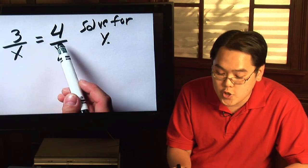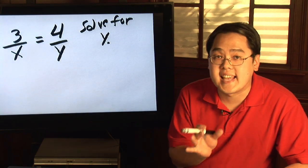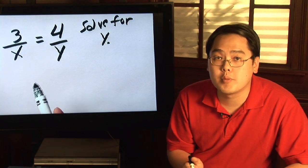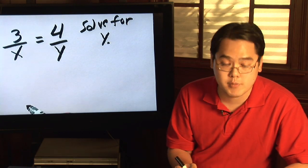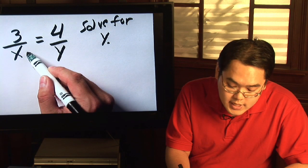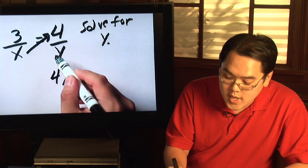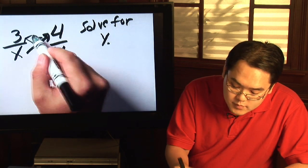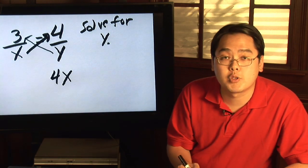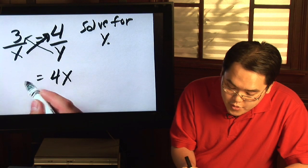But the thing is, because you have two proportions, you still solve it the exact same way like you would normal proportion problems, and that is via cross multiplication. So for example, take the x, multiply it with a 4, so you will have 4x. And then take the y, and multiply it with a 3, so you have 3y.